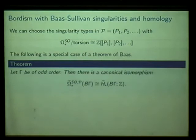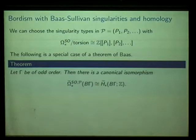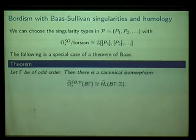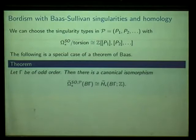We can take the singularity types P_1, P_2, ... in such a way that they generate the oriented bordism ring modulo torsion — this is a polynomial ring in generators of degree 4i by classical results of Milnor and Novikov — and we take these manifolds as generators. One of the most important theorems in this theory, proven by Baas, is that these manifolds give a full description of the homology of a classifying space Bγ, for a group γ of odd order. Alternatively: bordism with manifolds with Baas-Sullivan singularities away from the prime 2 is isomorphic to homology theory.